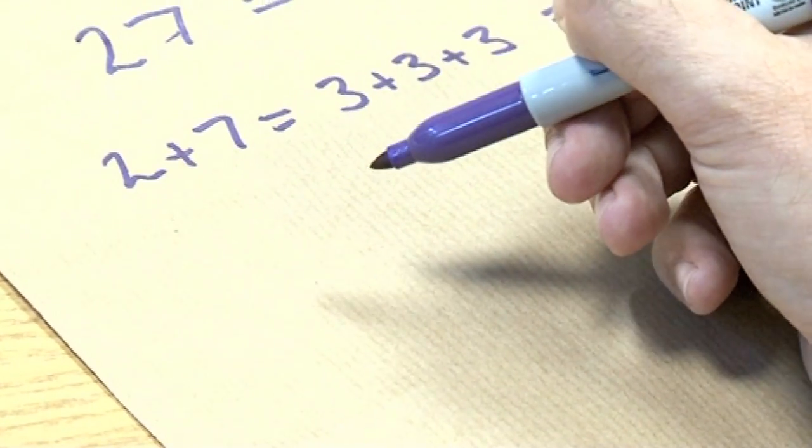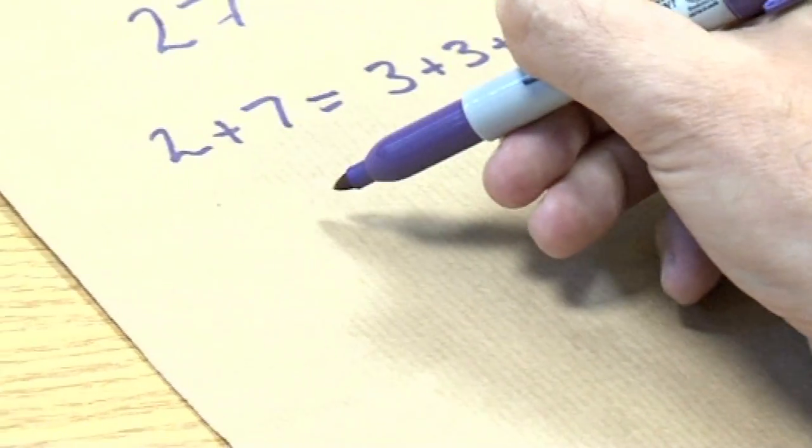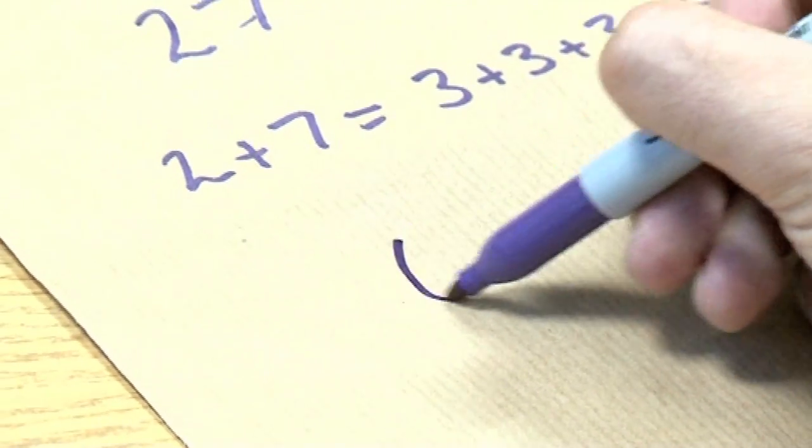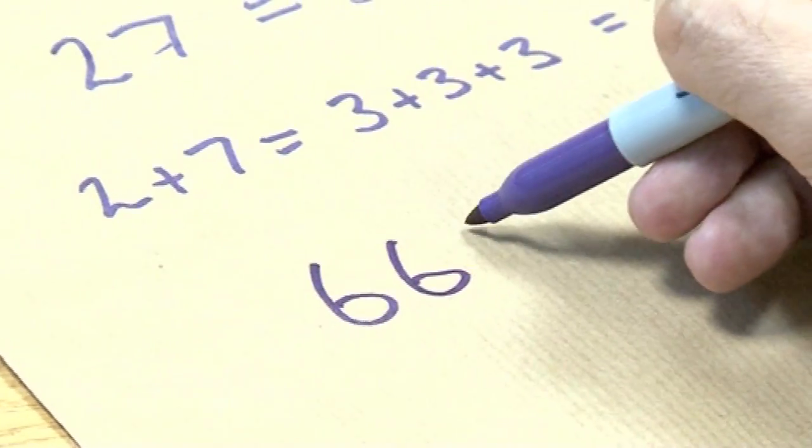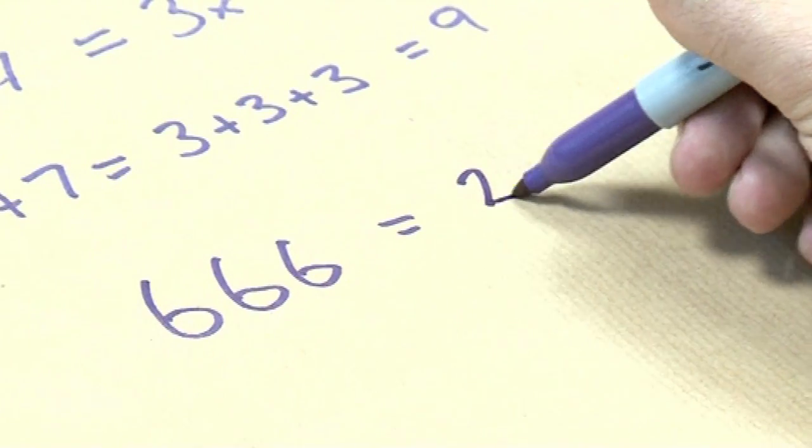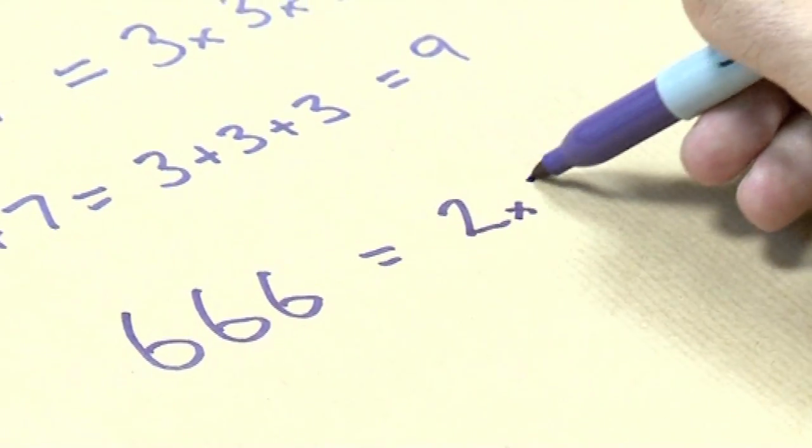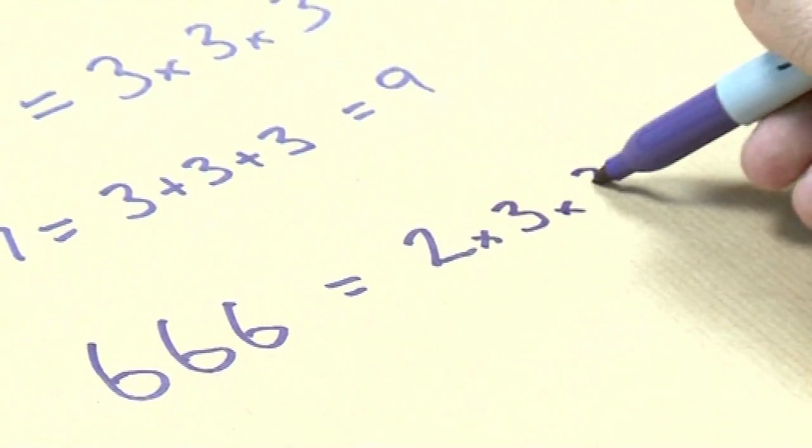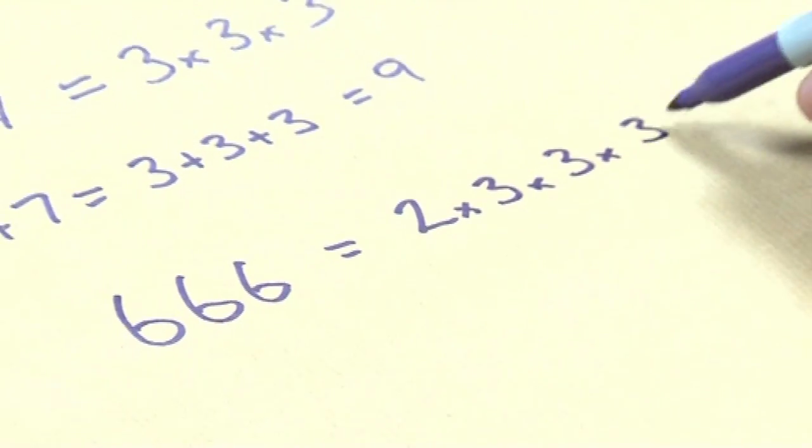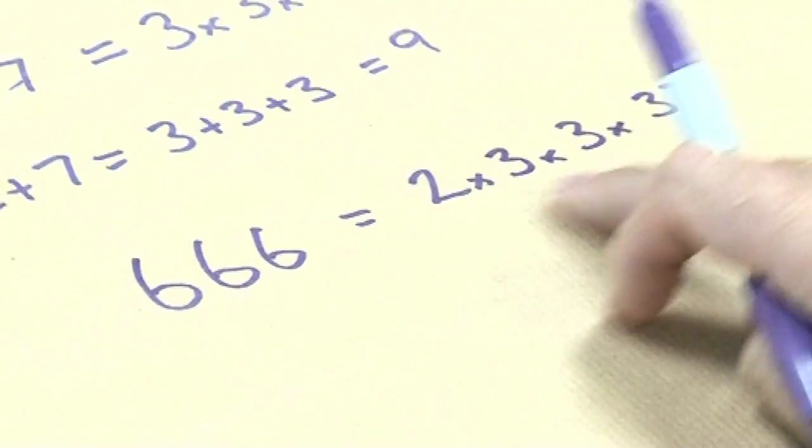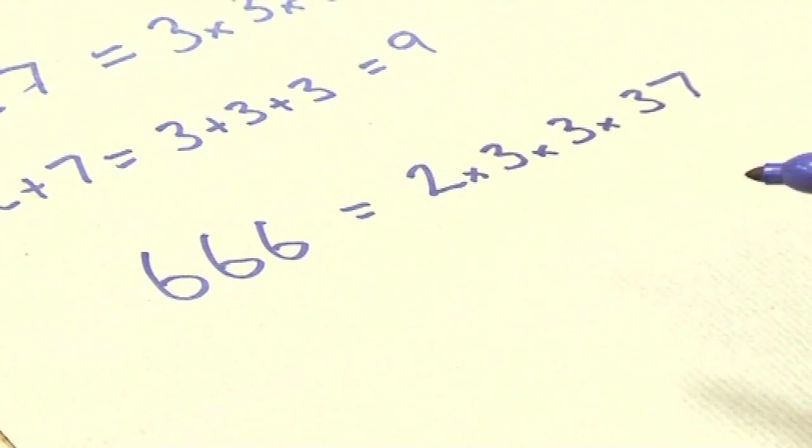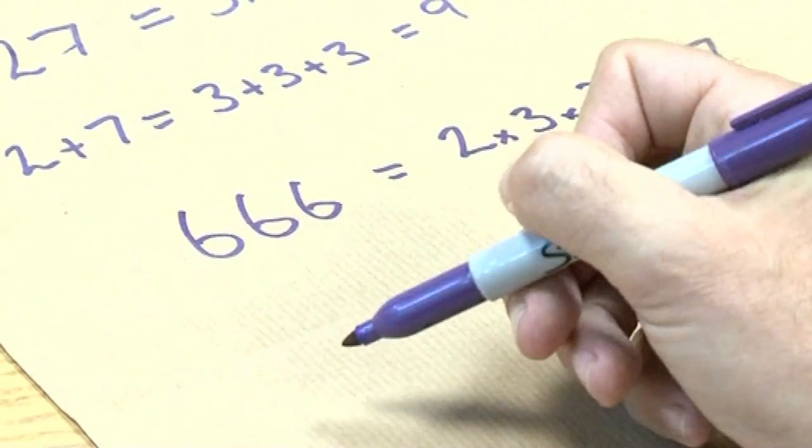A famous one, the one that you've already covered in Numberphile, which is the beast number. 6, 6, 6. So that breaks into 2 times 3 times 3 times 37. OK? If you multiply these together, you'll get back 6, 6, 6.